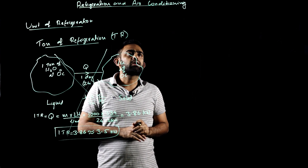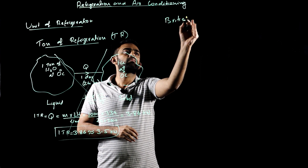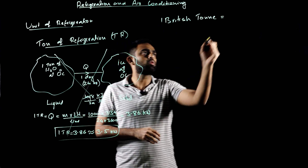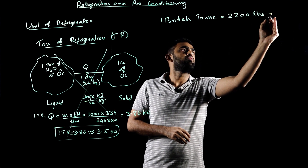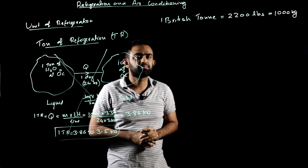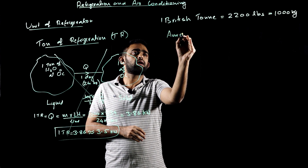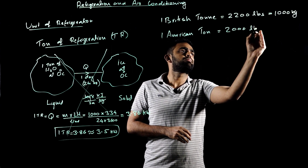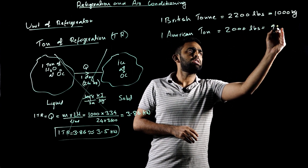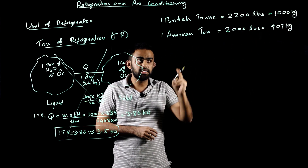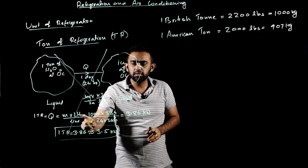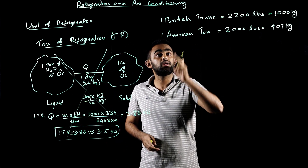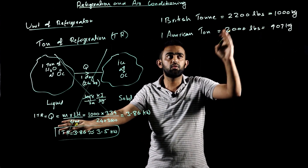What is the British ton? One British ton is equal to 2,200 pounds, which means 1,000 kilograms. The American ton is different — one American ton is 2,000 pounds, which equals 907 kilograms. We need to follow a specific convention: we follow the British ton, where one ton equals 1,000 kilograms.